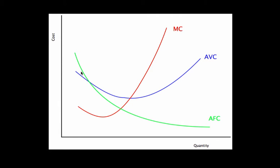The other cost we have is average fixed cost. Remember, the total fixed cost is not changing with output, but the average is going to change. So if I have a million dollar fixed cost and I start taking the average — if I have one unit of output, the average fixed cost is a million dollars. As soon as I have two units, the average is $500,000. It's fixed cost per unit. If I had 10 units, my average fixed cost is $100,000. I'm just taking that fixed cost and dividing it by output.